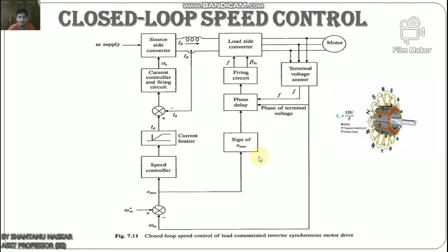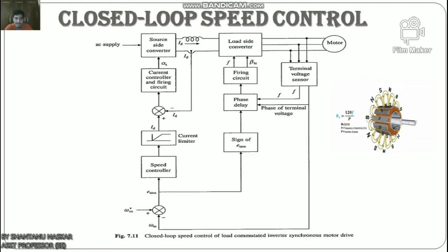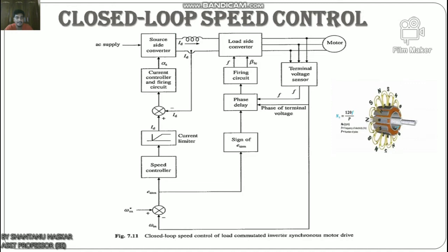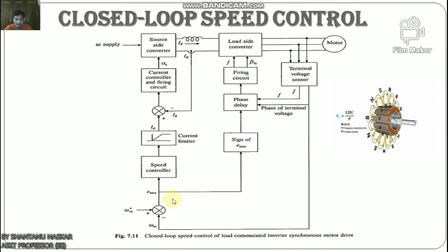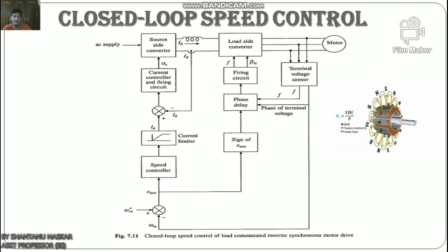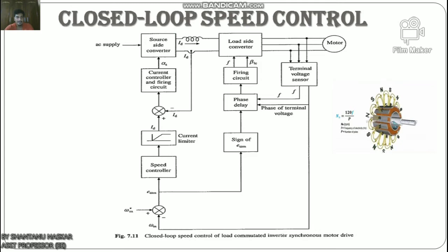Now we will discuss closed-loop speed control. The scheme employs an outer speed control loop and an inner current control loop with a limiter, similar to a DC motor. The terminal voltage sensor generates reference pulses of the same frequency as the machine induced voltage. The phase delay circuit shifts the reference pulses suitably to obtain control at a constant commutation lead angle βlc. Depending on the sign of the speed error, βlc is set to provide motoring or braking operation. An increase in reference speed ω*m produces a positive speed error; βlc is set for motoring operation, and the speed controller and current limiter set the DC link current reference at the maximum permissible value so the machine accelerates fast.